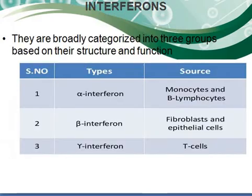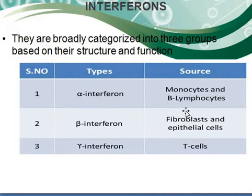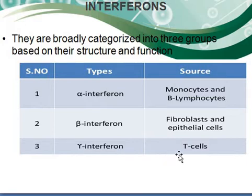Let's discuss about different classes of interferon. Interferon can be classified into three classes: alpha interferon, beta interferon, and gamma interferon. As you can see in this diagram, the right-hand side gives the idea for the source of interferon. Alpha interferons are generated with the help of monocytes and B-lymphocytes. Interferon beta is generated by fibroblast and epithelial cells, and gamma interferons are generated with the help of those cells.